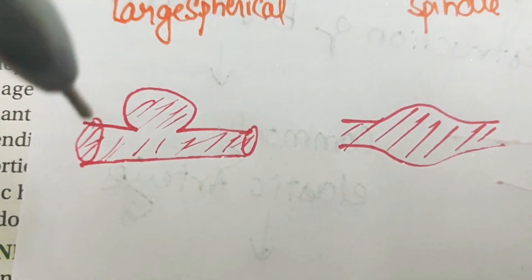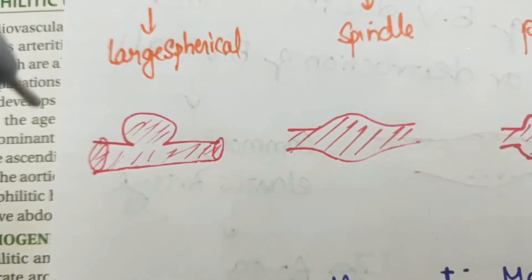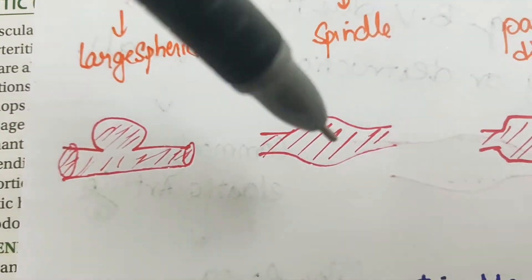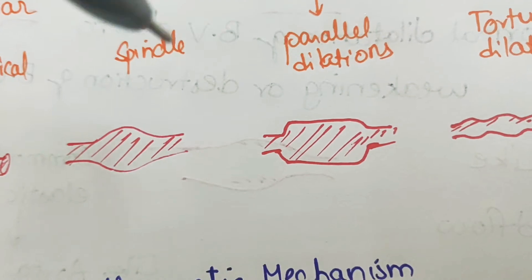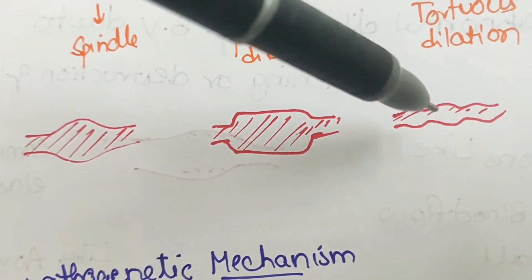Like you can see here, this is a saccular aneurysm, this is spindle, that is fusiform, and this is cylindrical, and this is serpentine, and this is racemose.